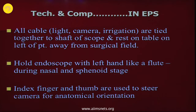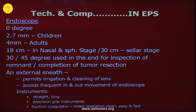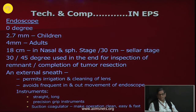All cables — light, camera, and irrigation — should be tied together to the shaft of the scope and rest on the table on the left side of the patient so they are out of the surgical field. The endoscope is held like a flute in the left hand, with index finger and thumb used to focus the camera or for orientation. Use a 0-degree 4mm 18cm endoscope in adults; the 18cm length is used up to nasal and sphenoid stages, after which a 30cm may be used. In children, a 2.7mm endoscope is used. Thirty- and 45-degree scopes are used at the end for inspection of remnants and completion of tumor resection.